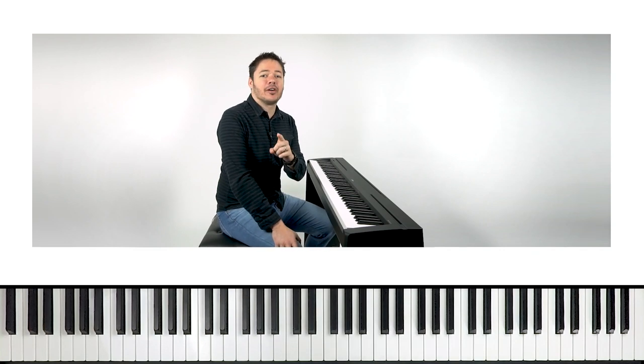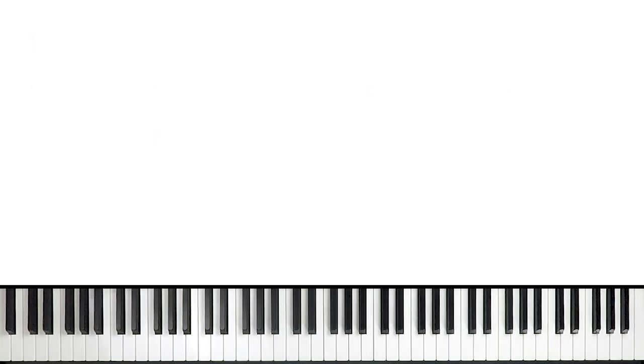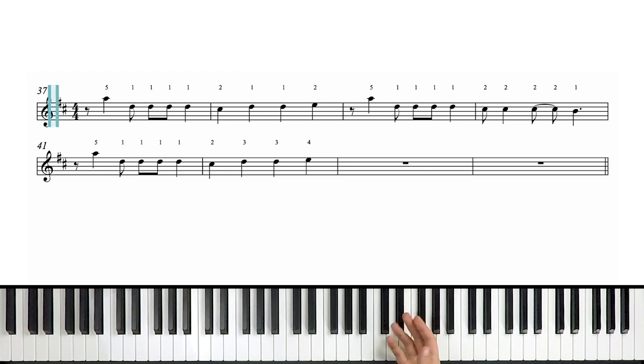I'll start by breaking down the right-hand part for you first, shall we? Our key signature tells us that there are two sharps, F sharp and C sharp. That tells us we're in the key of D. Our time signature is four-four, and that means four beats per measure.